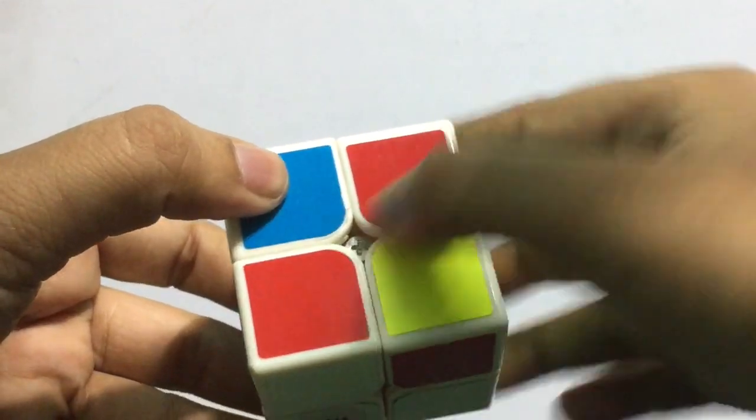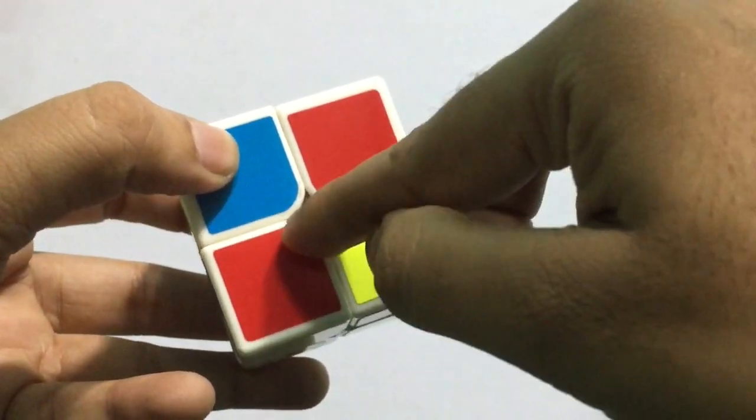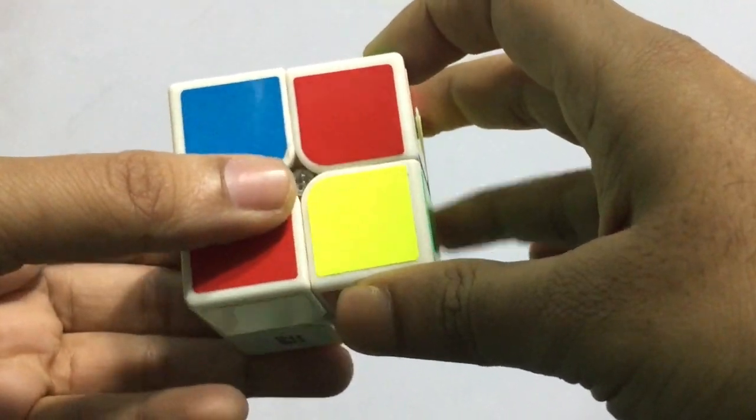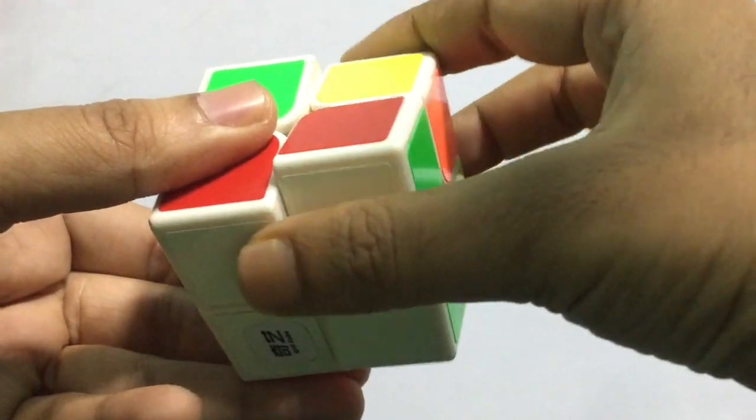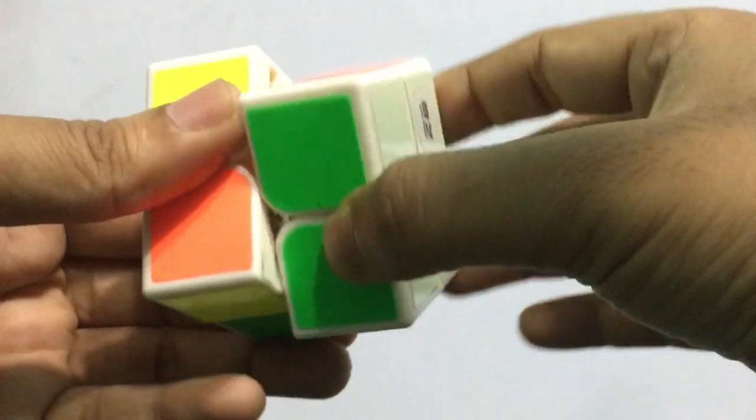We can find red, we can find the corner here again. So we can do the same thing here: right, top, then right back. By this, this part is complete.